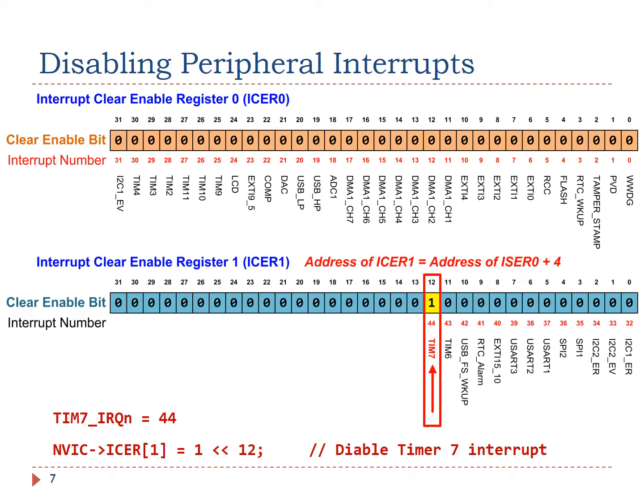Separating enable bits and disable bits into two separate register sets — ICER and ISER — provides great convenience for software programmers. It allows us to enable or disable an interrupt flexibly, without worrying about writing 0 to the other bits in the target register.